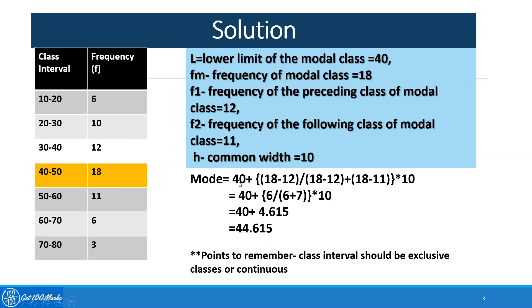So lower boundary of the modal class is 40 plus (18 minus 12) divided by (18 minus 12) plus (18 minus 11) times the common width, which in my case is 10. We can calculate and see the value is 44.615.